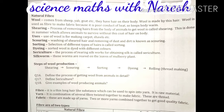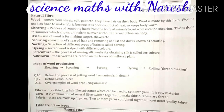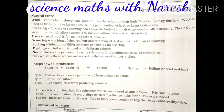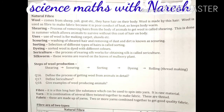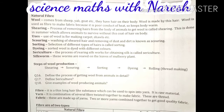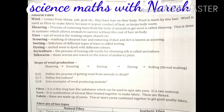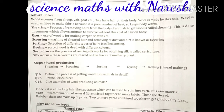In summer, animals and humans both don't need heat retained near their body, as there is already too much heat in the atmosphere. That is why shearing is done in the summer season. The uses of wool include making carpets and shawls.